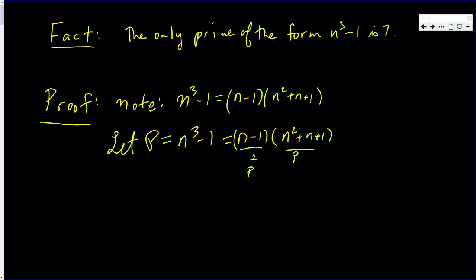Of course, it can be the other way around. This can be P and this can be 1. That is, either n minus 1 is 1 or n squared plus n plus 1 is 1. One of those two have to be 1.